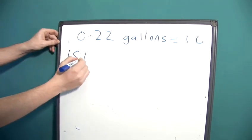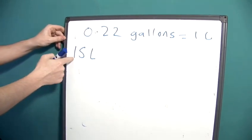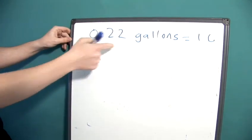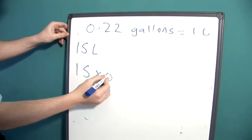So let's say we have 15 litres. Now all we need to do is multiply this 15 by 0.22 and that will tell us how many gallons we have. So if we have 15, we multiply it by 0.22.